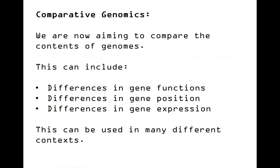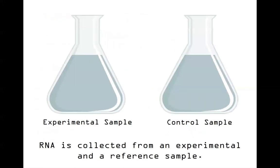For the sporulation example, the reference or control sample would be organisms not undergoing sporulation — just in regular interphase, living their daily lives. The experimental sample would be organisms undergoing sporulation. We want to compare what's going on between the two. We've been talking about gene expression and transcriptome work in lab, so this complements that — we're going to look at another way to get at what gene expression differences are present. The first thing we do is collect RNA from both samples.